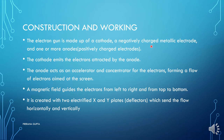In construction, the electron gun is made up of a cathode — a negatively charged metallic electrode — and one or more anodes, which are positively charged electrodes. Both anode and cathode are available in the CRT, allowing electrons to travel through. The cathode, or electron gun, emits electrons which are attracted by the anode. The anode acts as an accelerator and concentrator for the electrons, forming a flow of electrons aimed at the screen. The cathode's job is simply to emit and send the electrons.